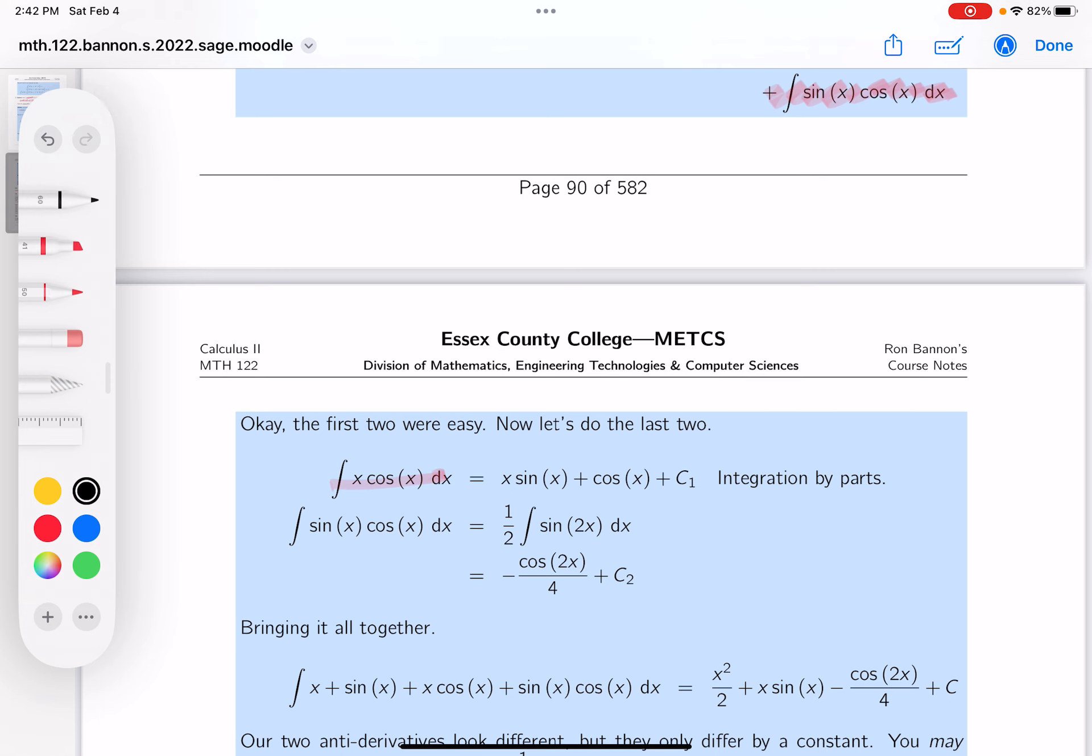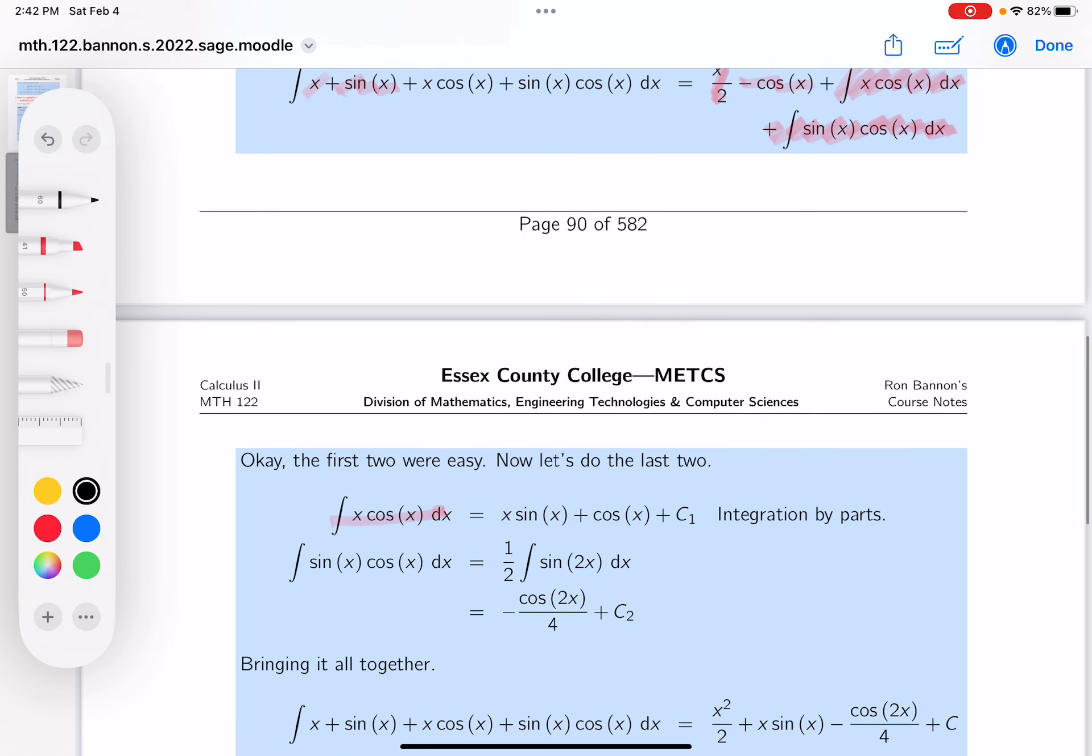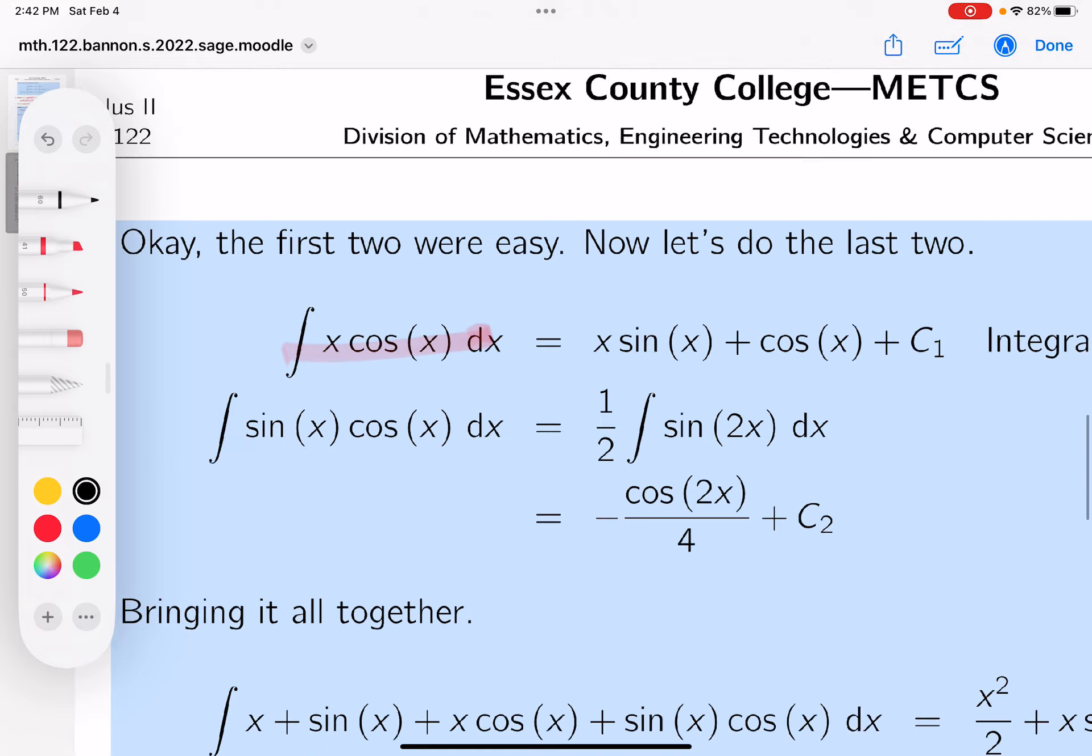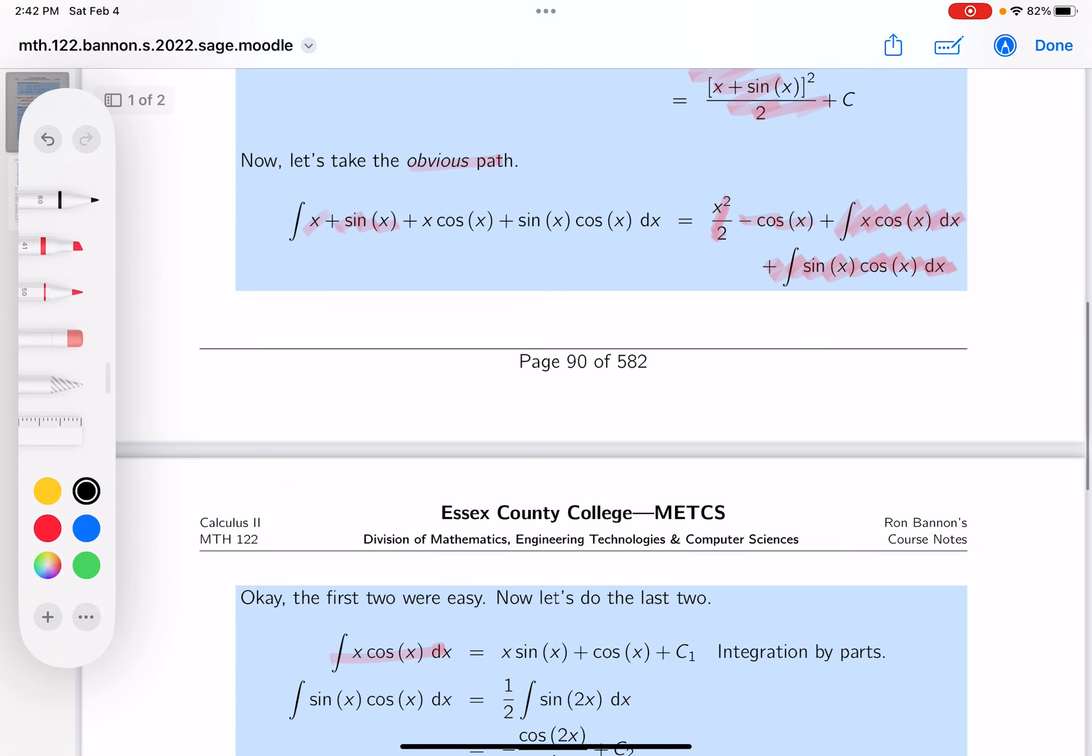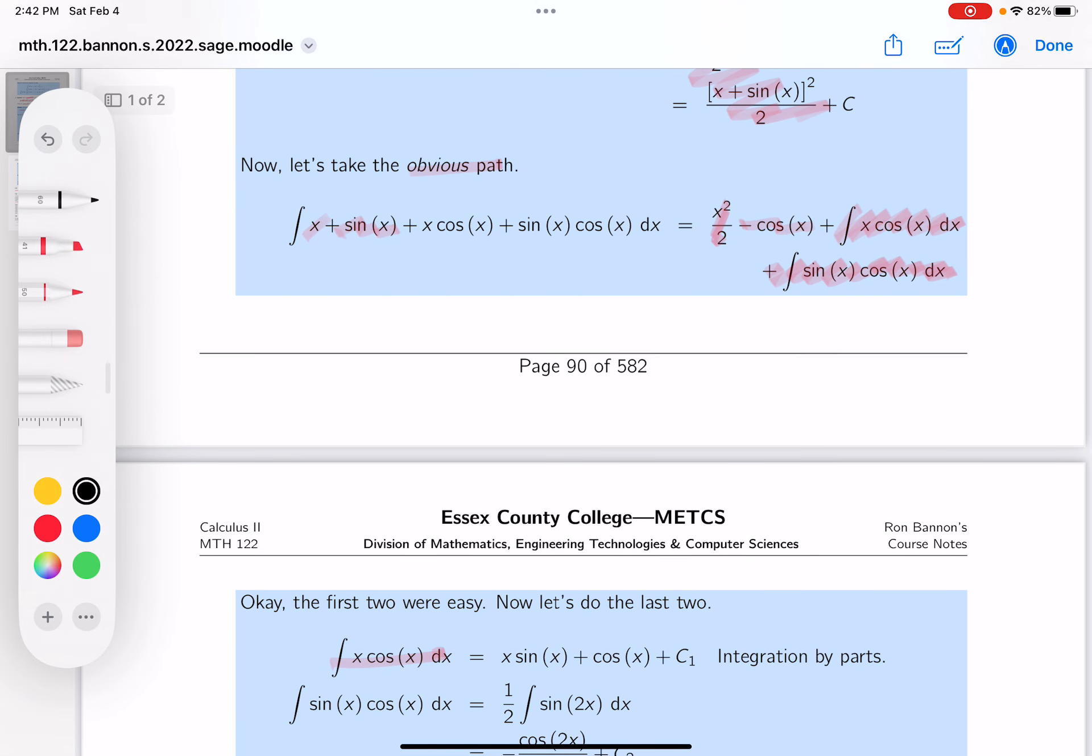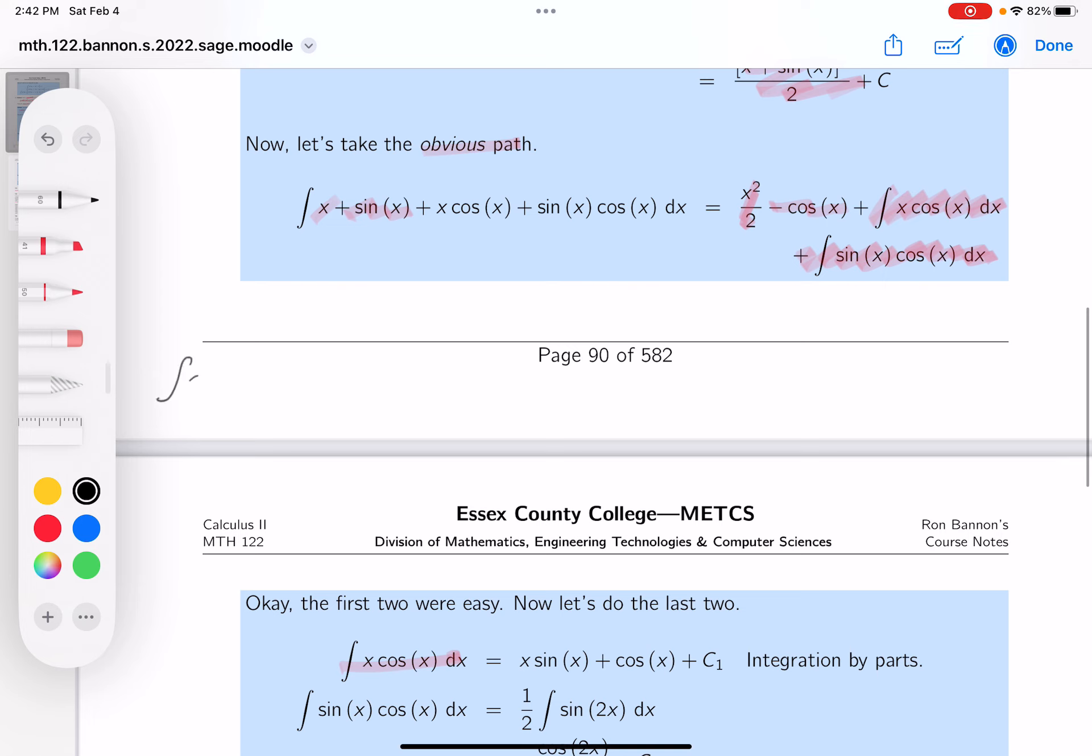And let's do this one first. Let me write it down for you. It's going to be x cosine x dx. I probably would use integration by parts. And I would probably say u is equal to x, and dv would equal cosine x dx.